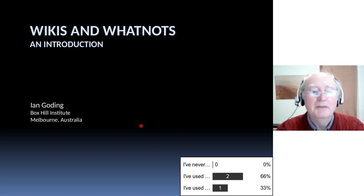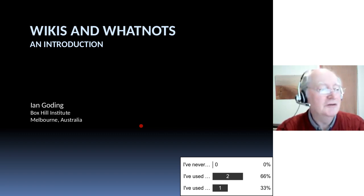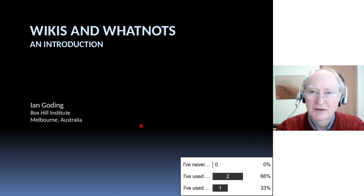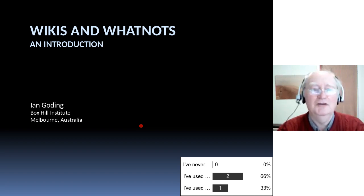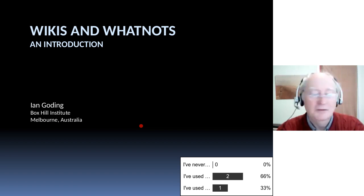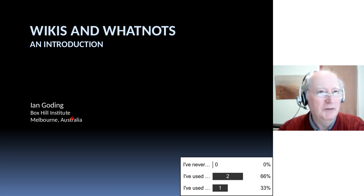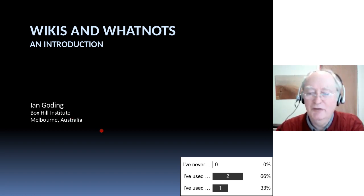When I started off I was thinking wikis were very much an underutilized educational experience — that was my experience at the institution I work in. But in preparing this talk I found hundreds and hundreds of examples of wikis being used at primary and secondary level. One reference at the end has a list of about 500 wikis, the teachers involved, and their purpose. So I'm wondering if it's competency-based training that discourages collaboration, or whether learning becomes more individualized as we move up the age group and focus more on qualifications.